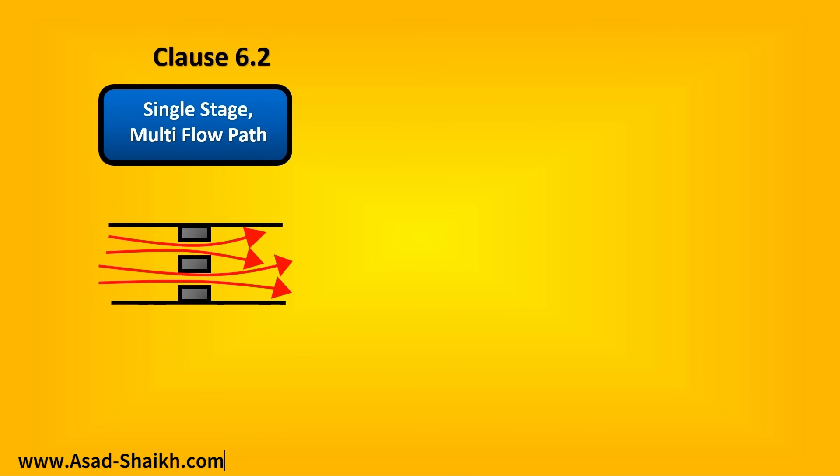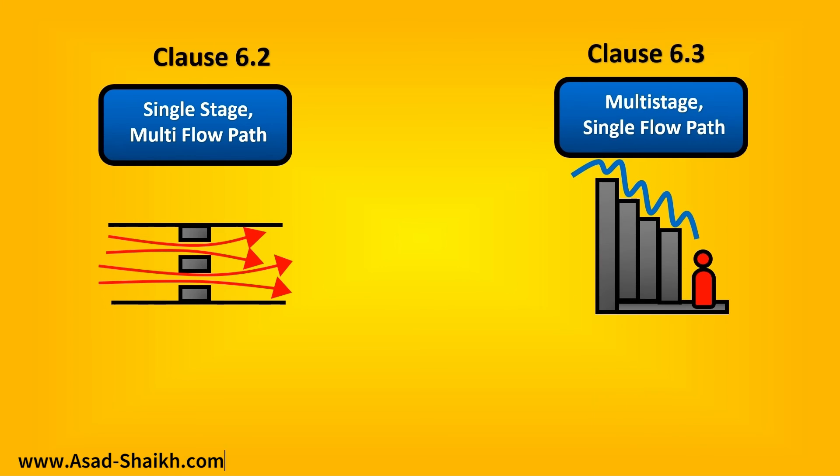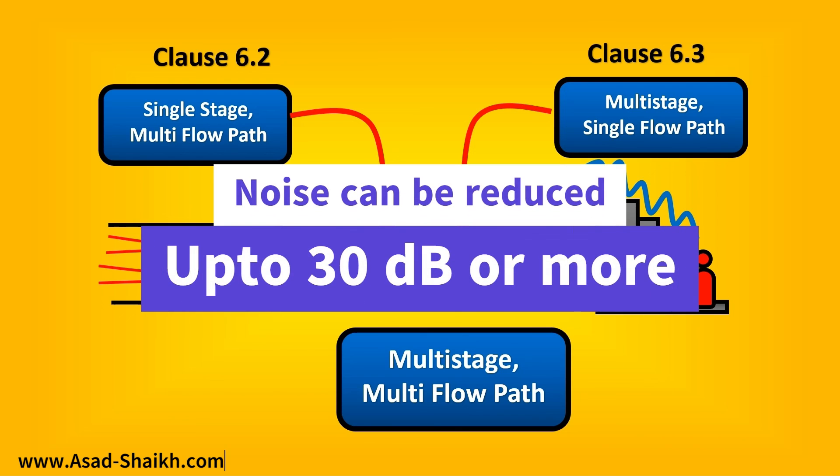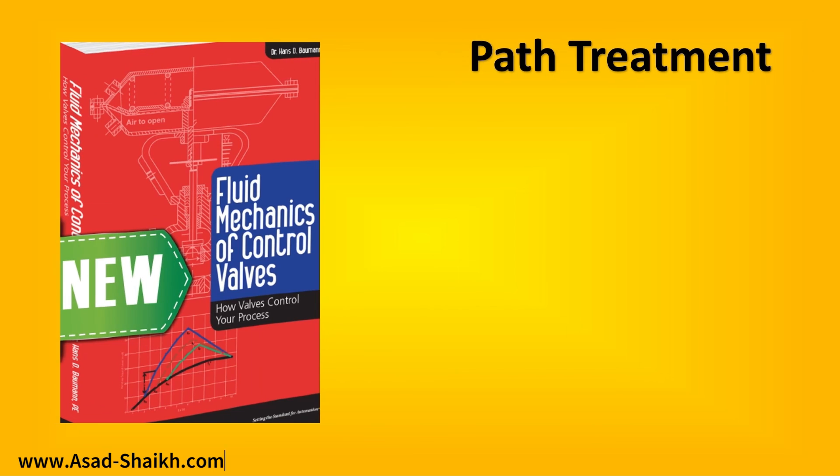Getting to clause 6.2, which we just saw, which was basically single stage but multiple flow paths available, and 6.3, which had multi-stages but only one flow path available. Now can you guess what is clause 6.4? It talks about multi-stage plus multiple flow paths. So basically we will use the best of both the technologies if the noise has to be reduced at a very higher level. A combination of both of them—multi-stage plus multi-flow path is basically clause 6.4—a trim which can reduce noise up till 30 dB and even more. So let us try to get into path treatment.